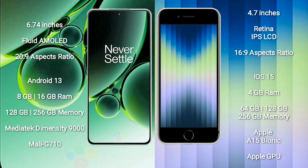OnePlus Nord 3 comes with 8GB or 16GB RAM and 128GB or 256GB internal storage, with a MediaTek Dimensity 9000 processor and Mali-G710 GPU. iPhone SE comes with 4GB RAM and 64GB, 128GB, or 256GB internal storage, with an Apple A15 Bionic processor and Apple GPU.